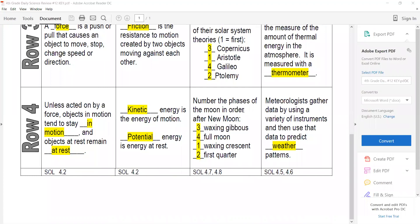If we're at new moon, what would come next? Well then we'd have waxing crescent and then first quarter, waxing gibbous, and then full moon. And meteorologists, they gather data using lots of different instruments and that helps predict weather patterns. Hopefully you guys did well. Great job! I will see you next time. Bye.